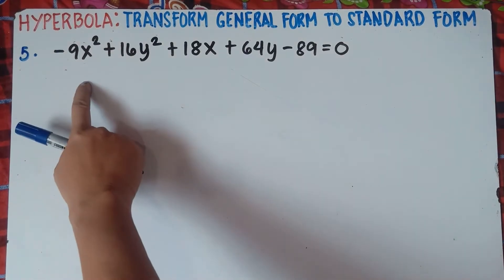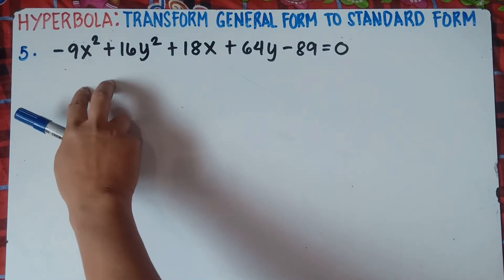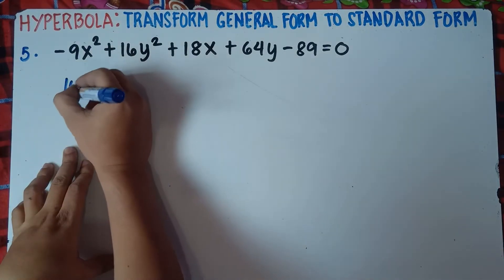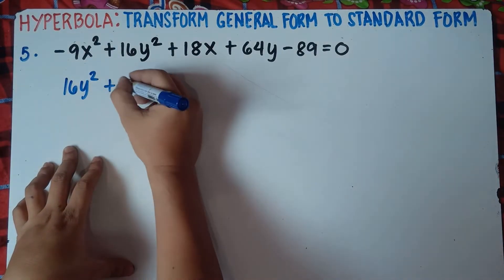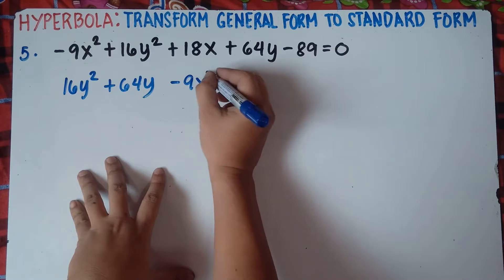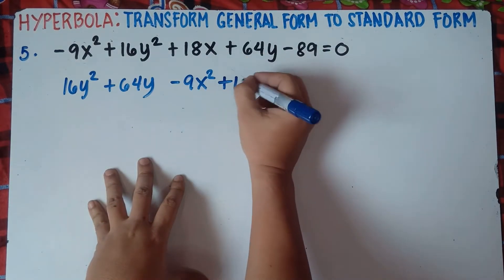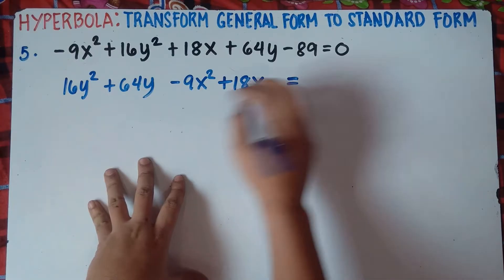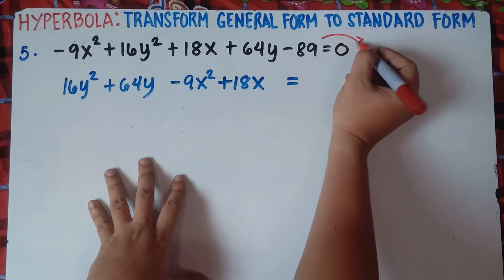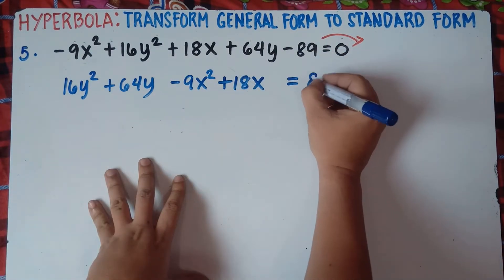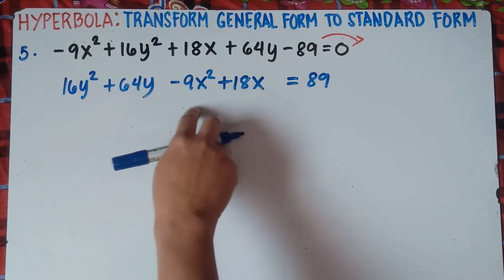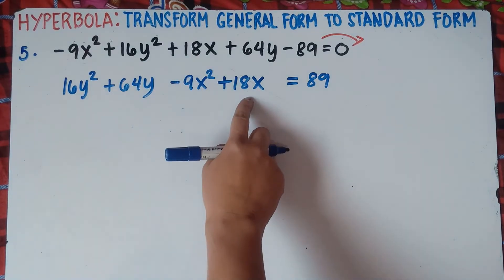Since we have negative 9x squared, the positive 16y squared comes first before this negative quadratic term. So we have: positive 16y squared, then positive 64y, then negative 9x squared, then positive 18x, equals — transpose the constant from left to right — so negative becomes positive 89.